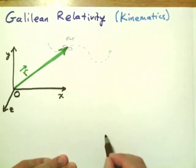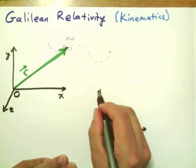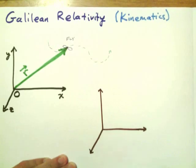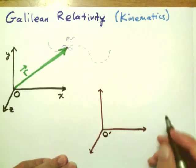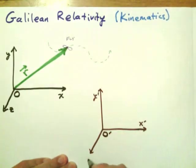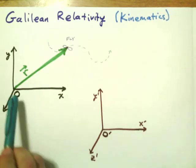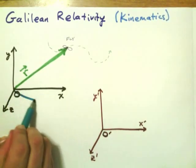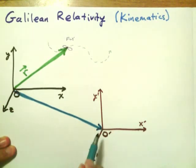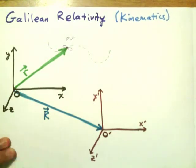Now I can talk about a new coordinate system — a measurement of the position of the fly as measured by a coordinate system at some other location. I'll call this new coordinate system the prime coordinate system, O-prime, with coordinates x-prime, y-prime, and z-prime. Since this coordinate system is displaced from the first, I'll represent that displacement by a new vector, capital R — the displacement vector of the old coordinate system relative to the new one.